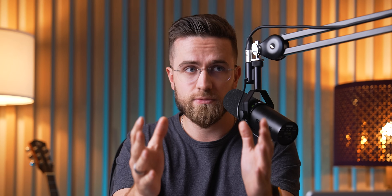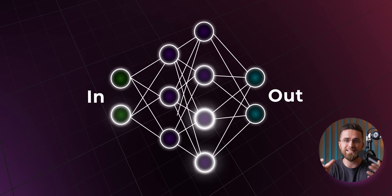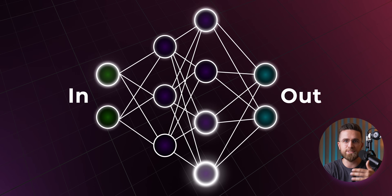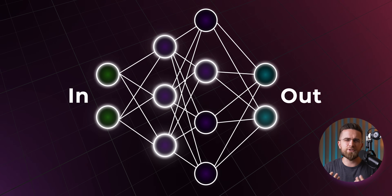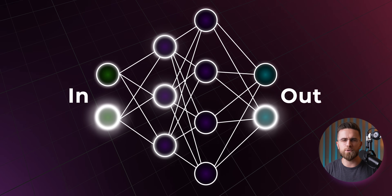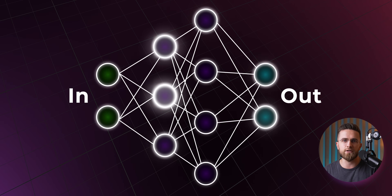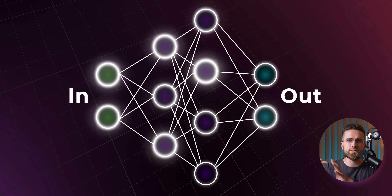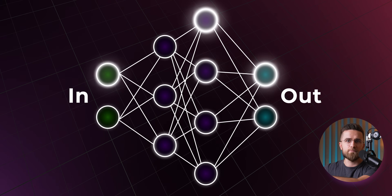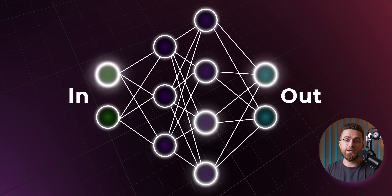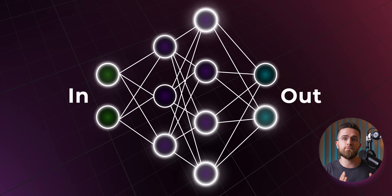Just to set the record straight, what we call AI isn't some thinking machine — it's actually neural networks. At their core, neural networks are systems that learn patterns in data and use those patterns to make predictions and generate results. Imagine them as a bunch of layered filters. Each layer processes the data, passes it to the next layer, which refines it even more, and so on. By the end, you get the final output.